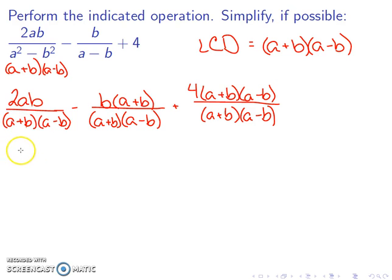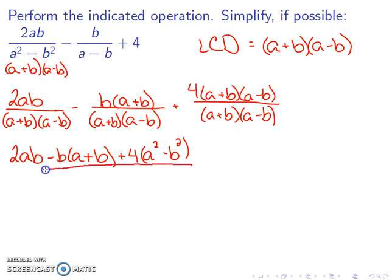Now I can add the numerators and put it over the common denominator. So I have 2ab minus b times (a + b) plus 4 times—and I'm going to go ahead and multiply this out to get a squared minus b squared—all over (a + b)(a - b).